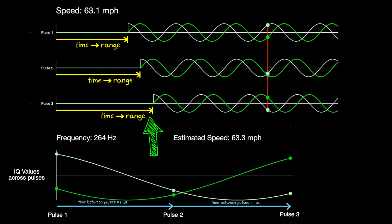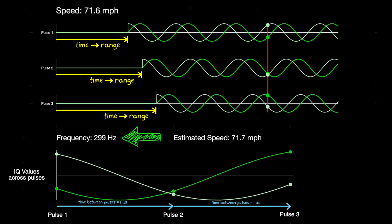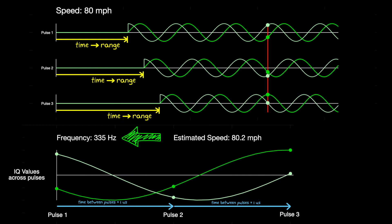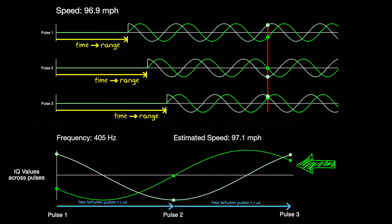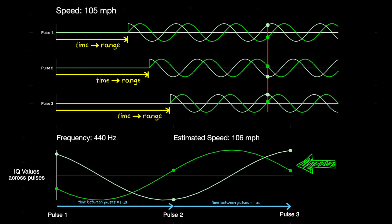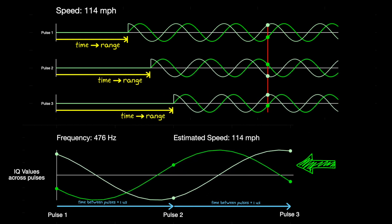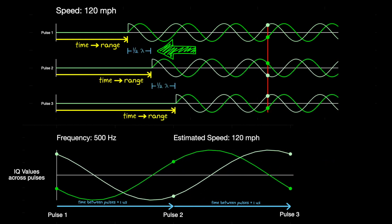And so we can convert this Doppler frequency into a speed. And as the true speed of the object increases, the time delay between the pulses increases, and the Doppler shift then also increases. In this way, we can estimate the speed by looking at the frequency of this sampled signal.